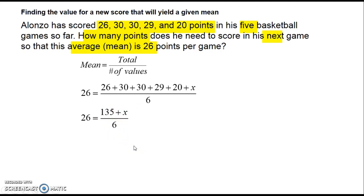Multiply both sides by 6. Now, subtract 135 from both sides. x is 21. Alonzo needs to score 21 in his next game so that his mean score will be 26.